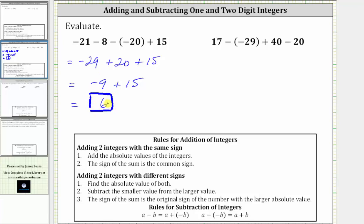For the second example, working our way from left to right, notice how we have 17 minus negative 29. Subtracting a debt is the same as adding a gain, or subtracting a negative is equivalent to adding a positive. So let's write minus negative 29 as plus positive 29.